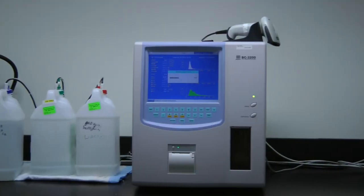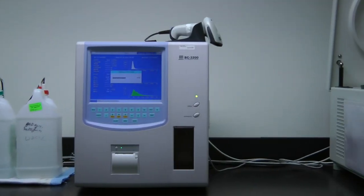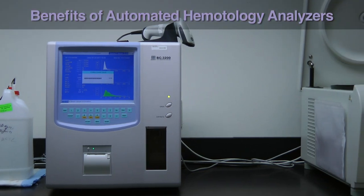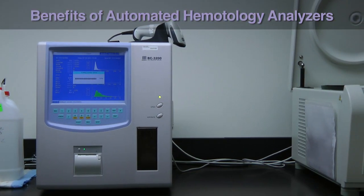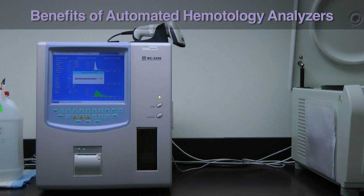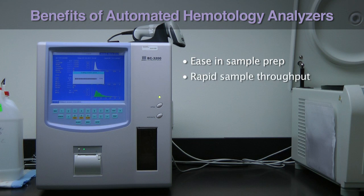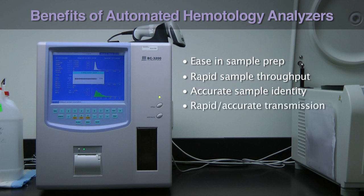PBMCs can be counted manually but this is labor-intensive. Use of automated hematology analyzers offer many advantages over manual cell counting methods: ease in sample preparation, rapid sample throughput up to hundreds per hour, accurate sample identity through the use of barcode technology, and rapid and accurate transmission of results into a laboratory information system.